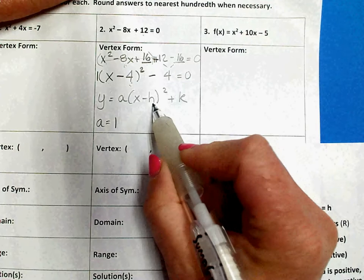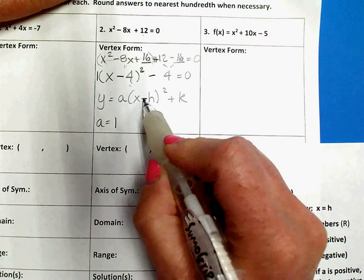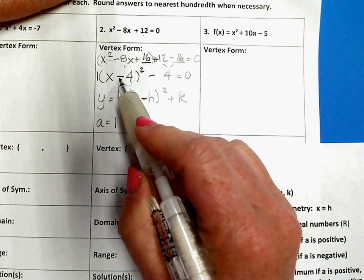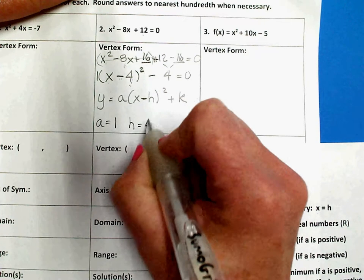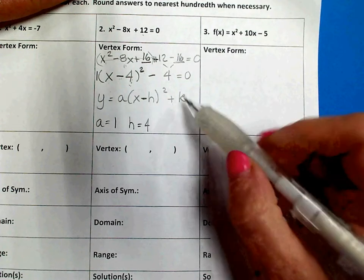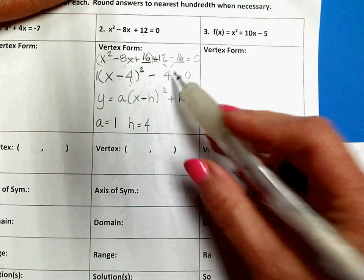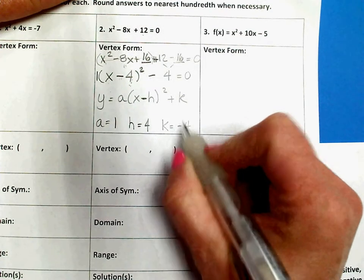Your h is positive 4. And again, because this minus sign is in the formula, the h value is the opposite of this sign. So, if this says minus 4, your h value is positive 4. Your plus k on the end, you have a minus 4 on the end, so therefore, your k is negative 4. The k value does not get a sign change because of the plus sign in the formula.